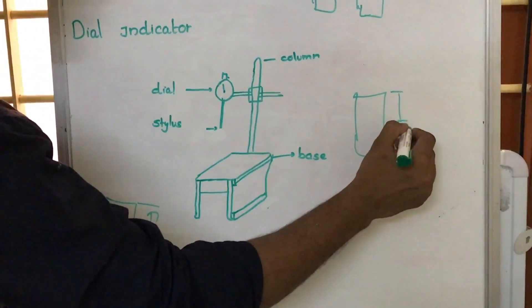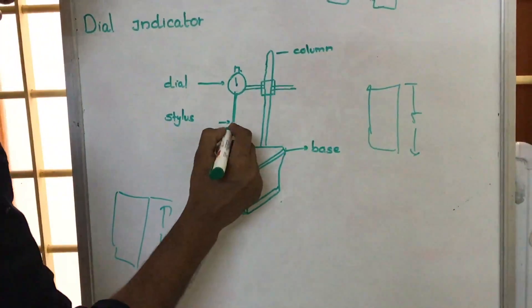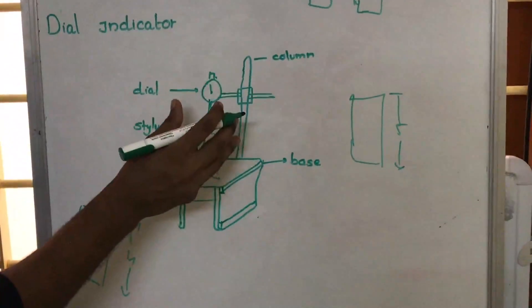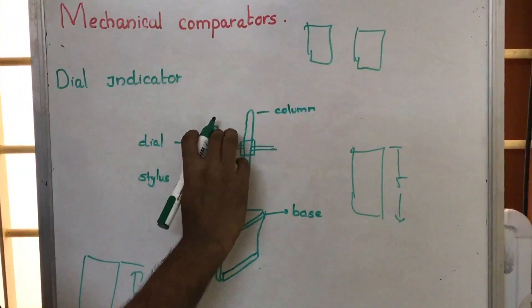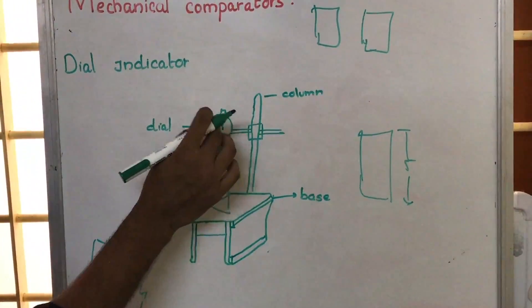Suppose say that this is 5 cm. So what we will do, we will place this reference here and after that, we will be adjusting this needle to zero. So we can turn this particular part and after that, we will be adjusting this needle to zero.